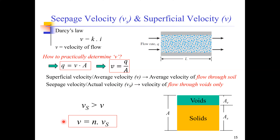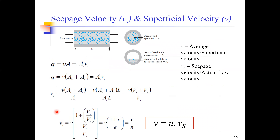Remember this expression because it comes in very handy in actual calculations. We can easily determine V (the superficial velocity) if we know the discharge and total cross-sectional area. We can also determine porosity from our earlier knowledge. So having average velocity and porosity, we can easily convert to seepage velocity. There is a derivation for this expression on the next slide, which I will leave for you to understand by yourself as it is straightforward.